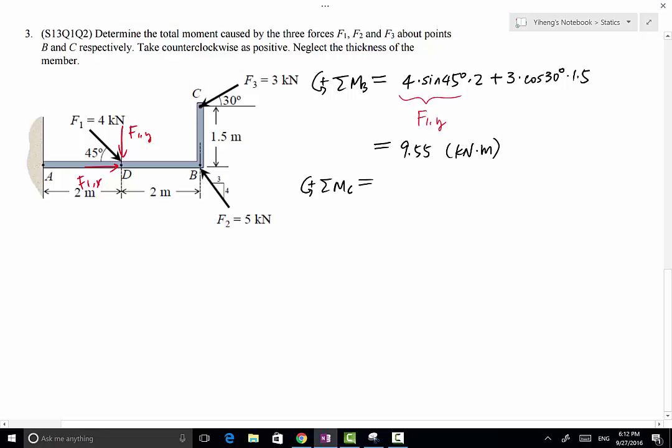Equals F1X, which is 4 times cosine 45 degrees, and its moment arm is 1.5 meters. It is causing a counterclockwise rotation, so it's positive. F1Y has a magnitude of 4 times sine 45 degrees. Its moment arm from point C is this distance, 2 meters, also counterclockwise, also positive. That's F1.